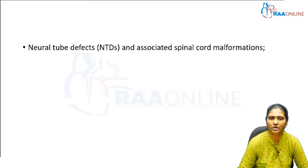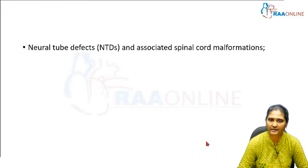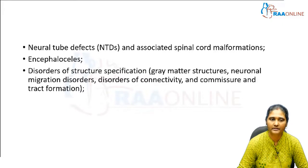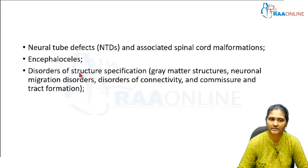The most common congenital abnormality is the neural tube defect and the associated spinal cord malformations. Next are encephaloceles, and then disorders of structural specification — such as neuronal migration disorders, grey matter structure disorders, or disorders of connectivity and commissure or tract formation. These are all grouped under structural specification disorders.